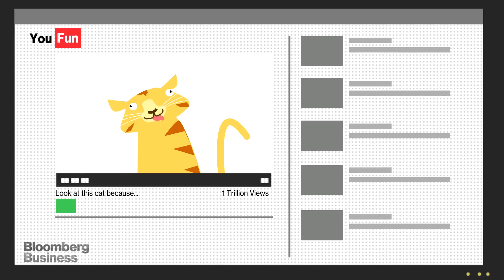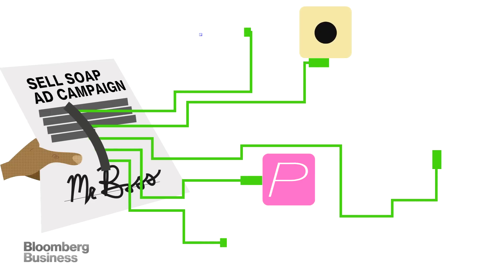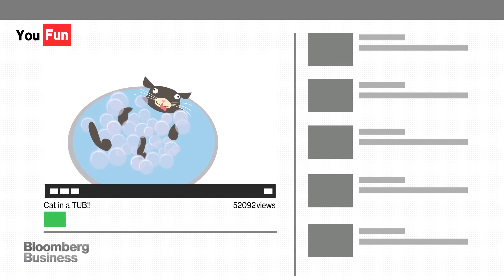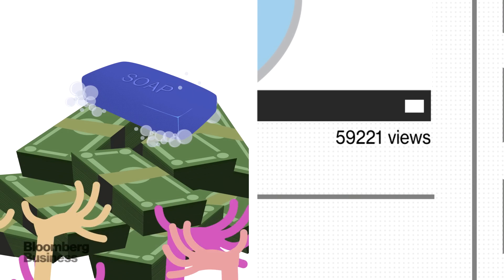Here's how that ad gets there. The soap maker's advertising order goes to a high-tech exchange where algorithms find websites that'll reach likely soap buyers. Say, a site with a video of a cat in a bathtub. The more views the video gets, presumably the more people will buy soap.